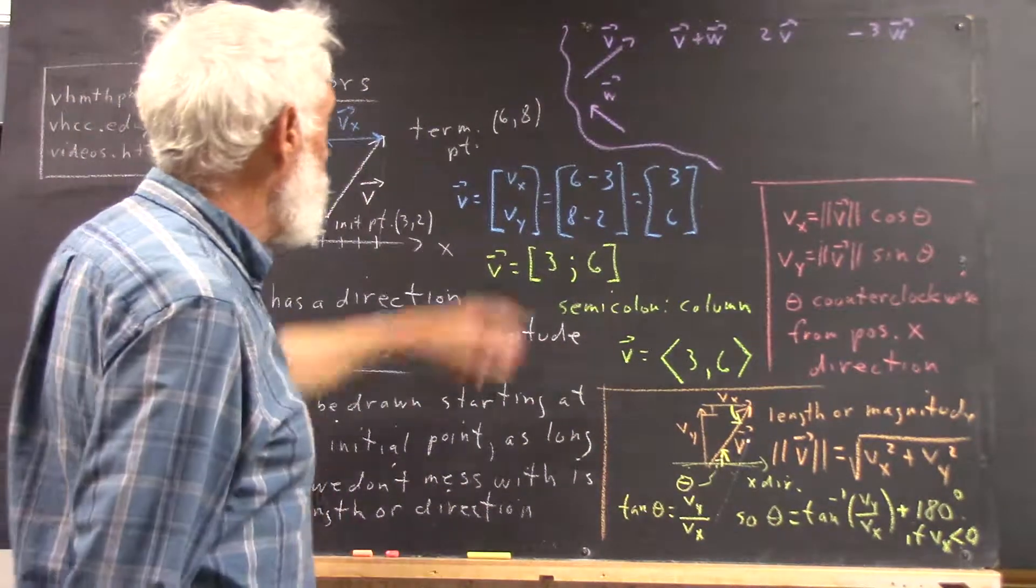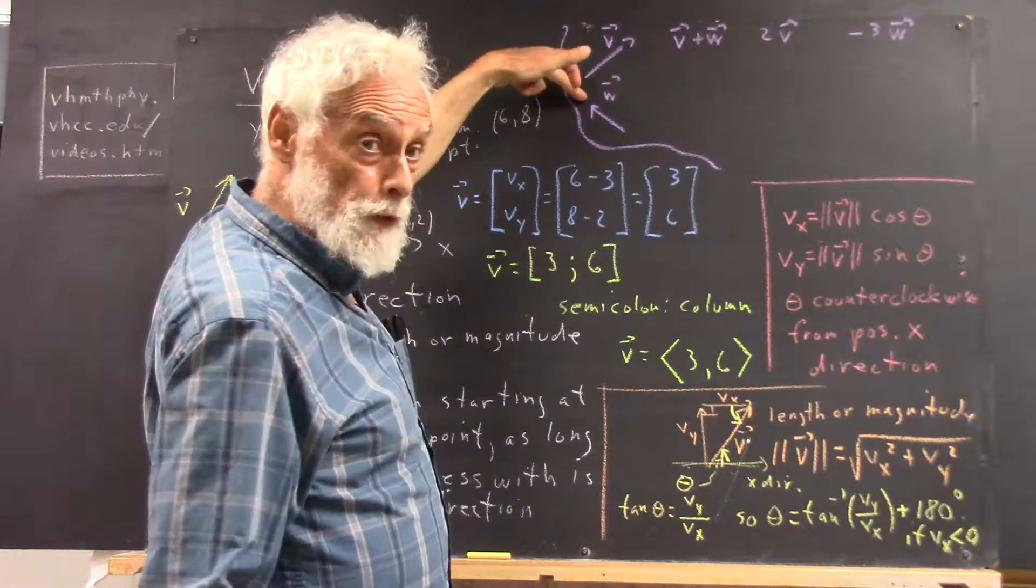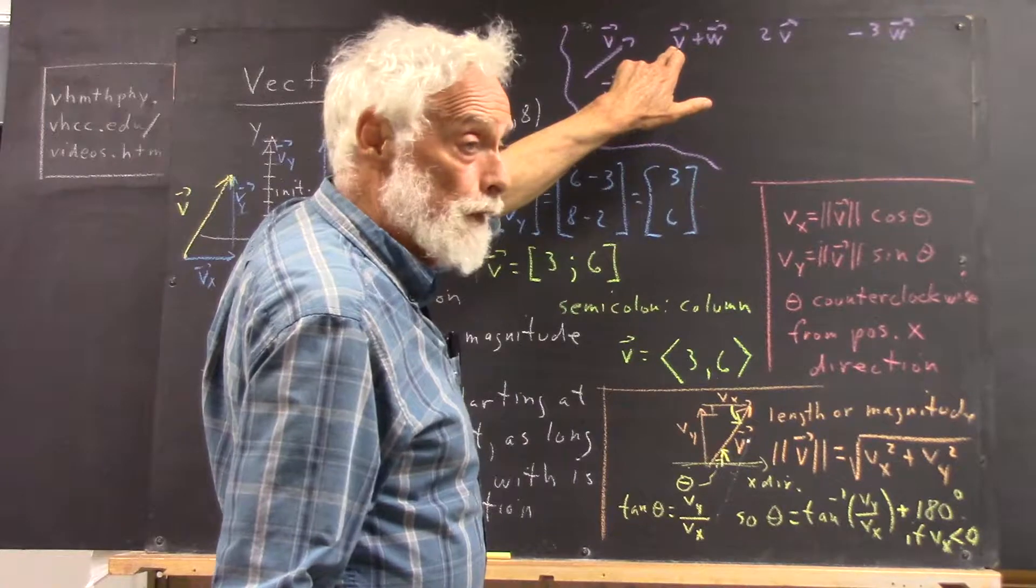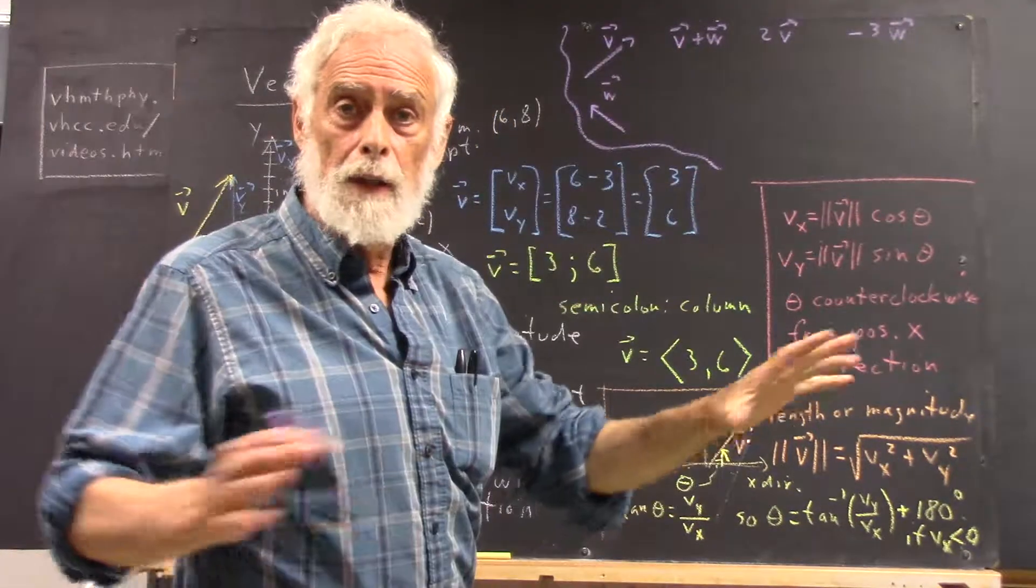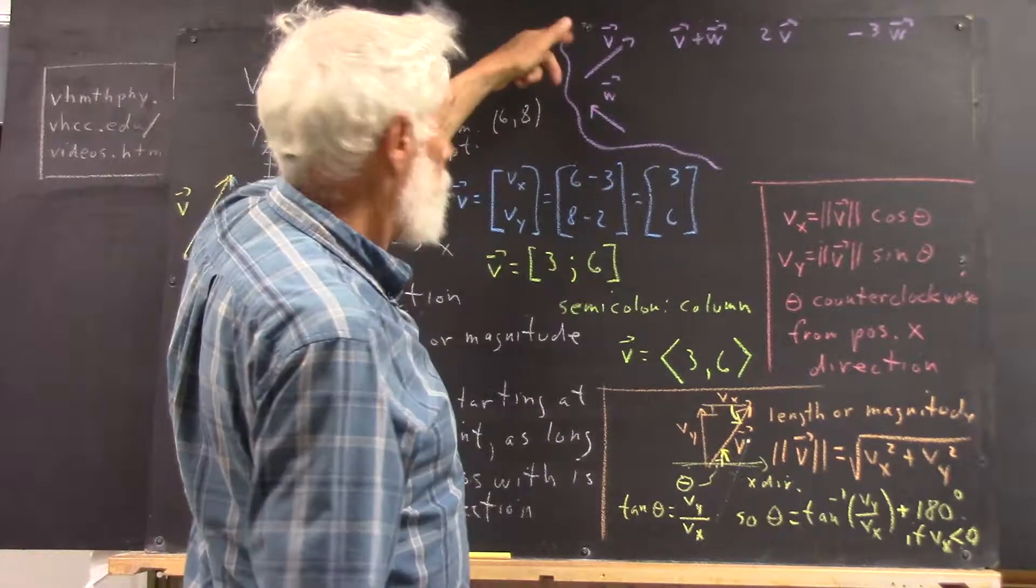Now, let's suppose we have some vector v, maybe different from this one, any old vector, and another vector w. How could we add the vectors v and w? I'm just talking about geometrically. How would you draw the vector for v plus w?